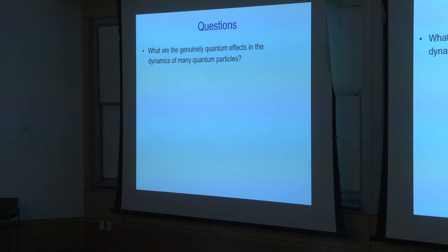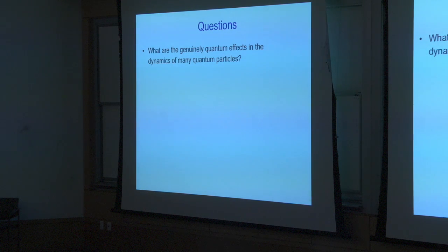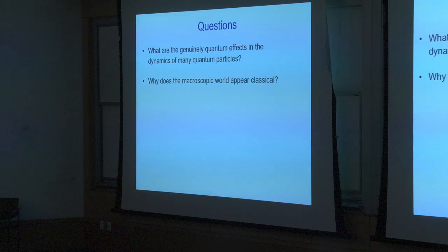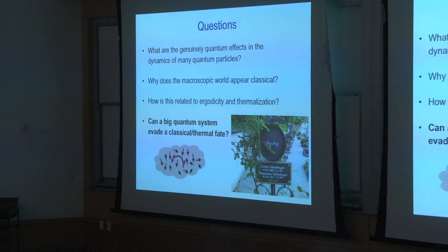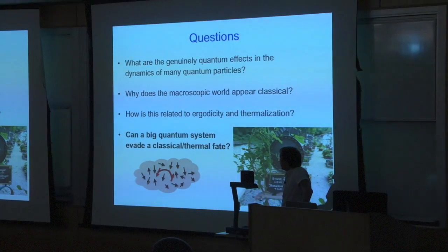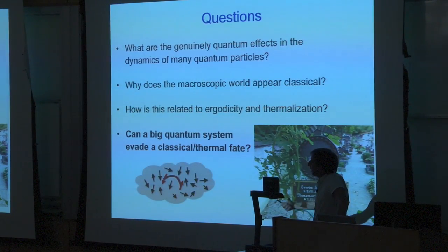What are the questions we want to study in dynamics? What are the genuinely quantum effects in the dynamics of a many-body quantum system? Often when you take a system with many particles and look at its long-time dynamics, it behaves classically. So what quantum effects can survive the long-time dynamics? Why does the macroscopic world appear classical? And is this necessary — will it eventually appear classical — and how is all of this related to thermalization and ergodicity in quantum systems? This is all related to the big question of whether a macroscopic system can evade this classical thermal fate.